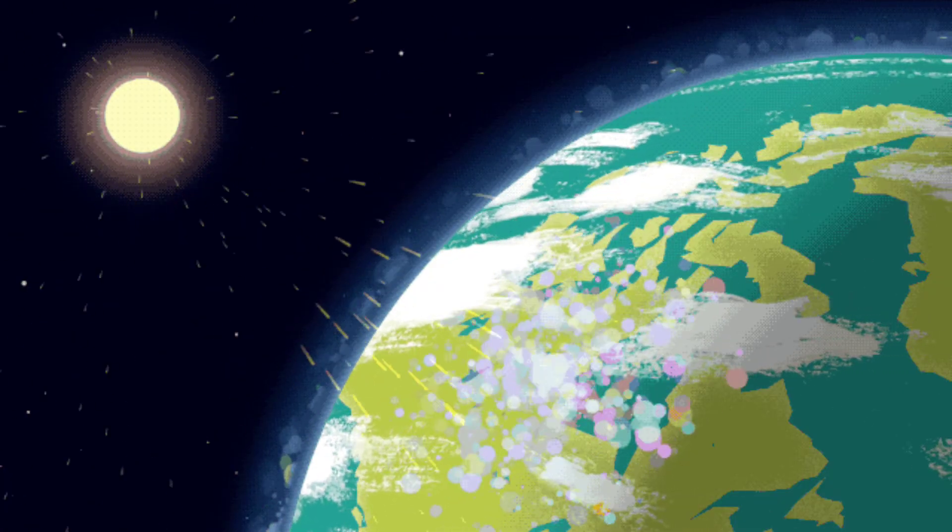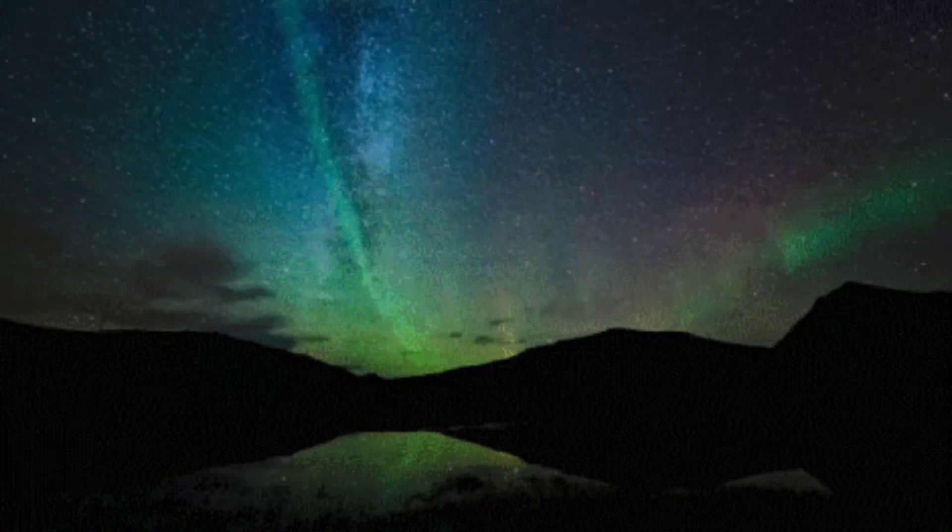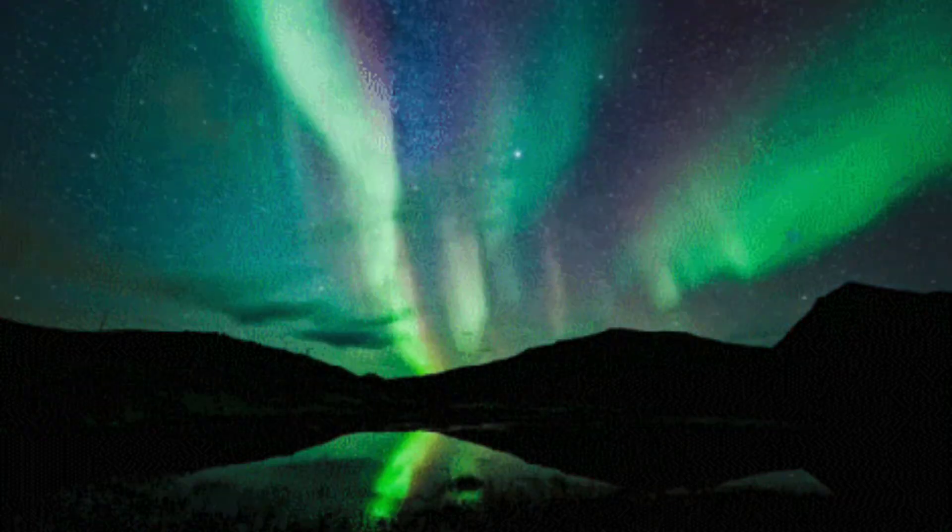But sometimes the big stream of these particles reaches Earth and interacts with the gases at the outer edge of our atmosphere. This causes streams of light in the sky, called auroras.